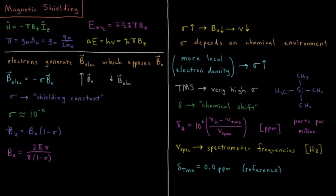Our magnetic field in the z-direction now is going to be the original magnetic field we felt, times 1 minus sigma. So now the magnetic field, B0,